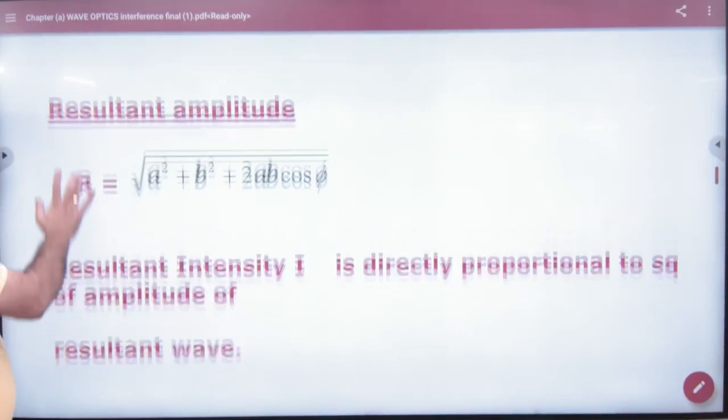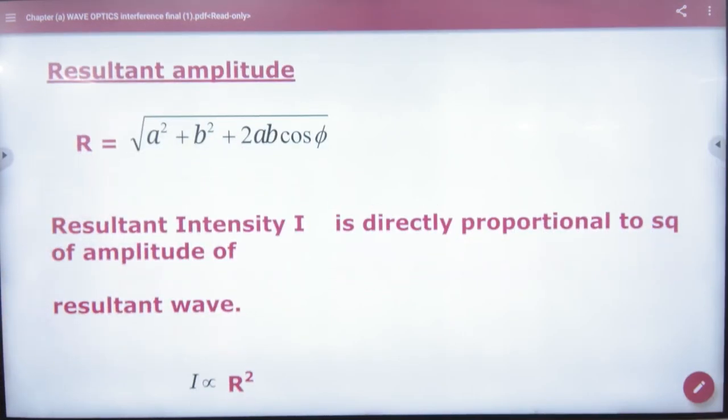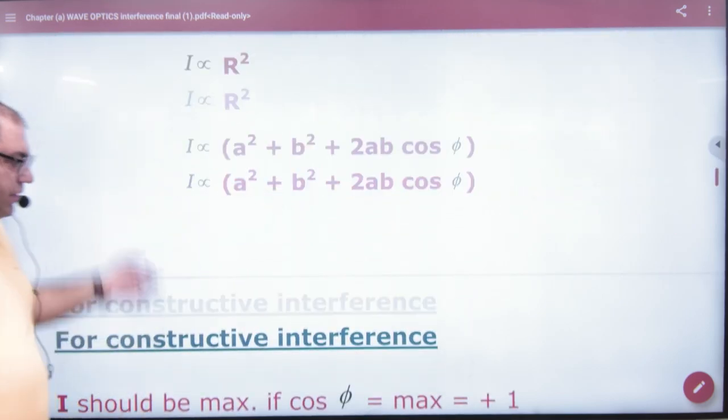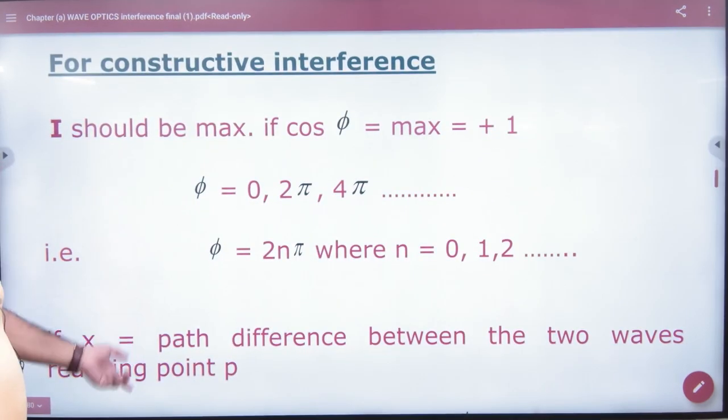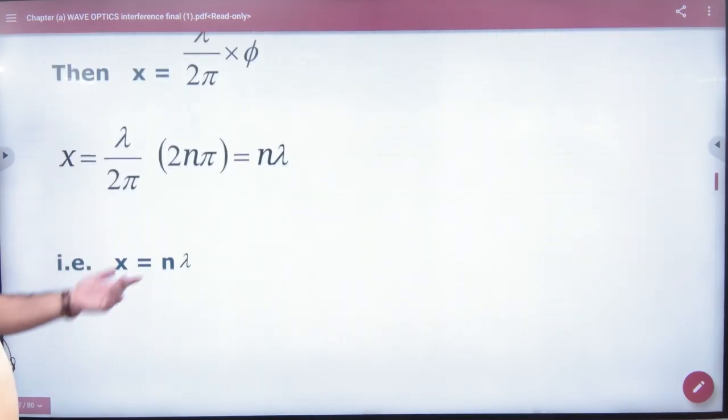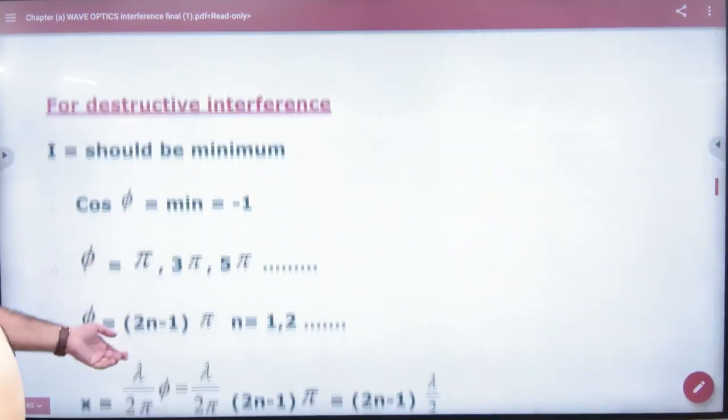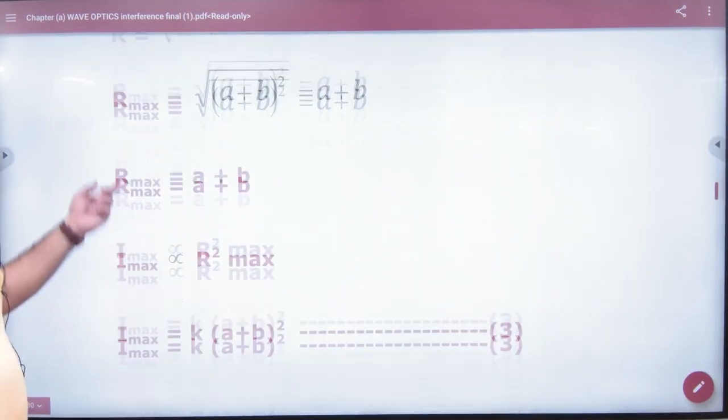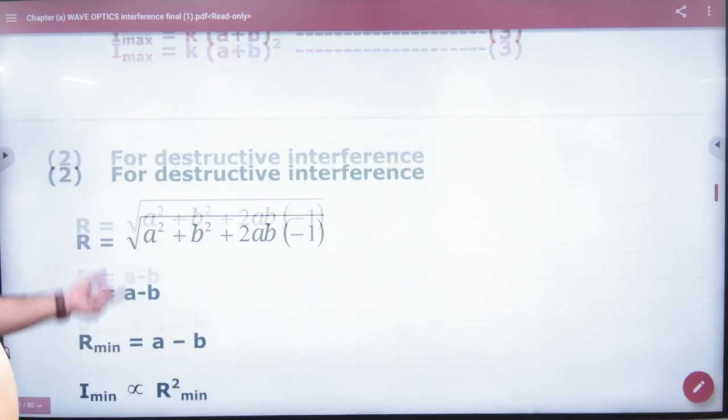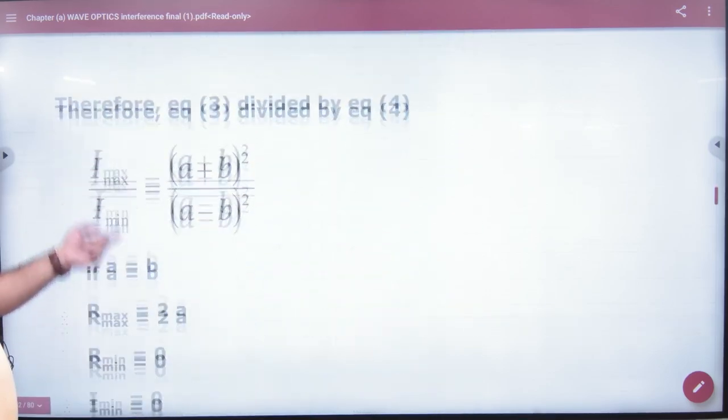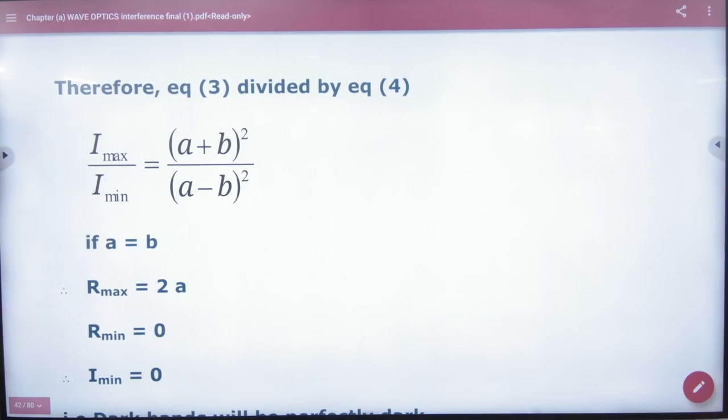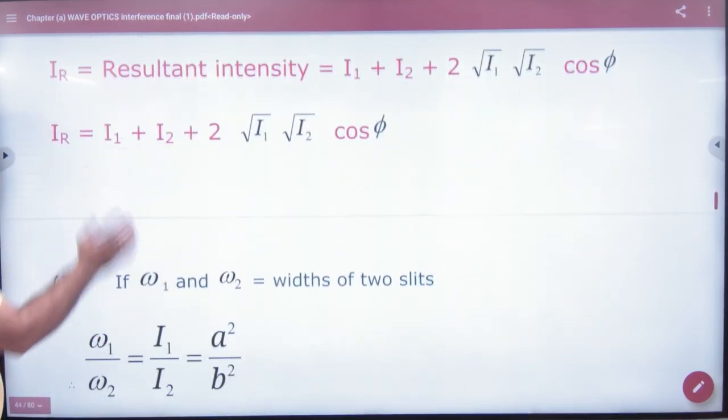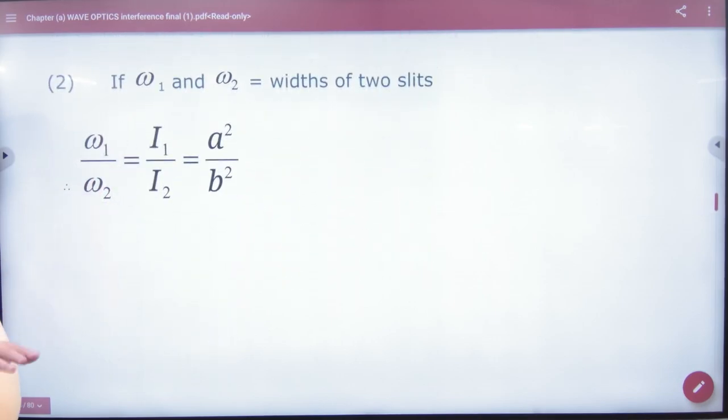Last time in YDSE with two waves, we covered the resultant amplitude formula, resultant intensity formula, and the conditions for maximum and minimum or constructive and destructive interference. We discussed R_max and R_min, and derived the ratio of I_max and I_min. Now note another formula.